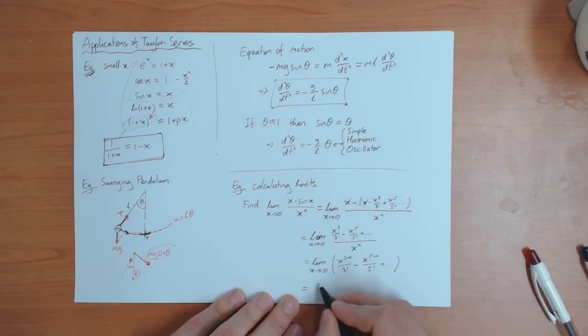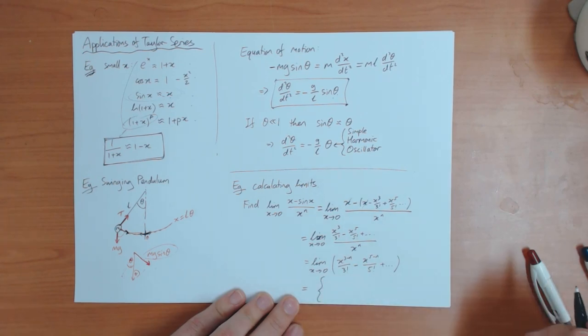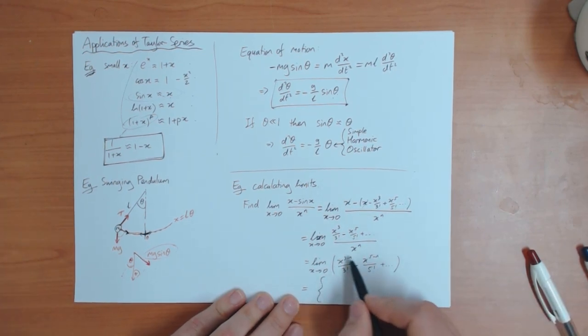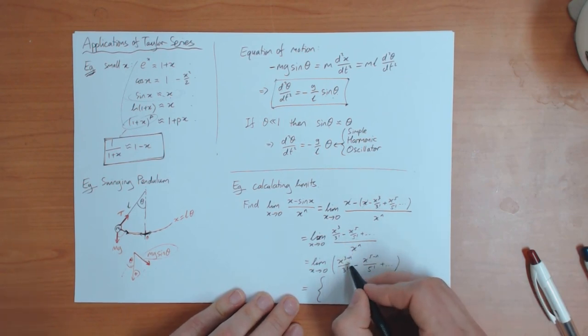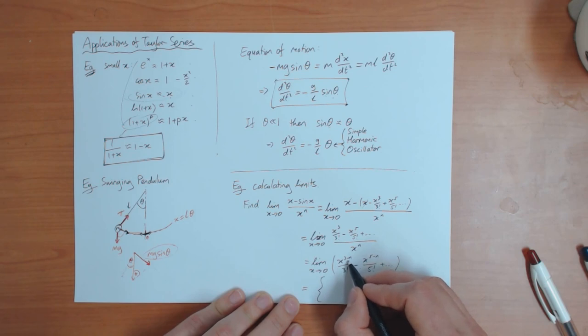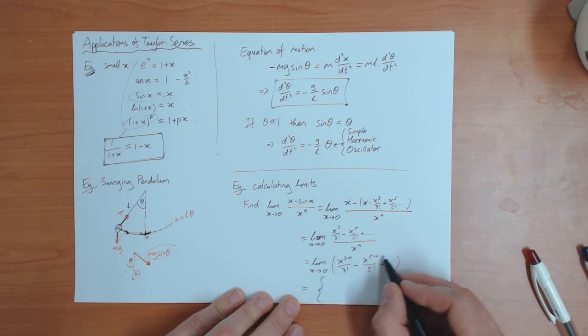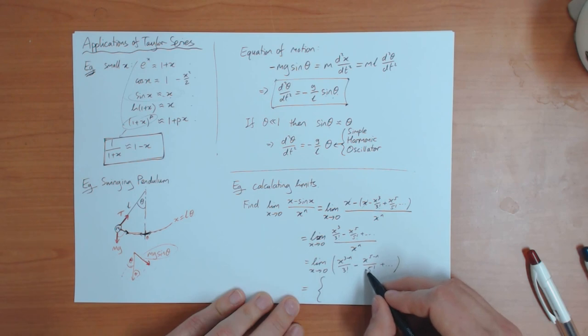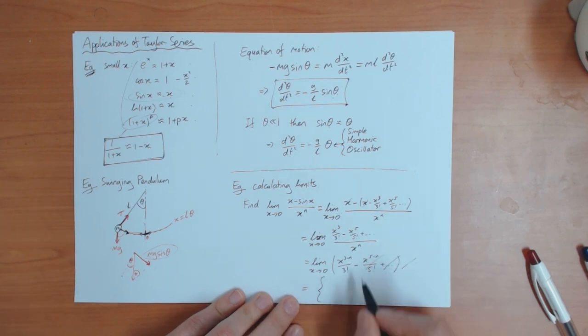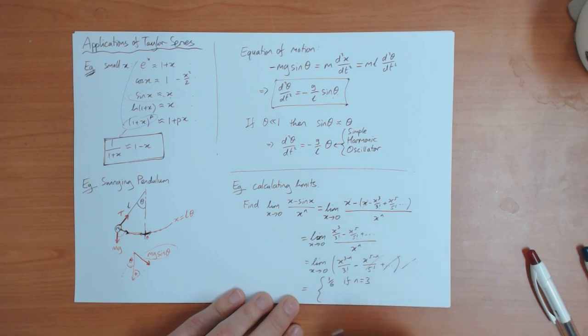So what's this equal to? I'm afraid I'm going to have to write a little bit small. There are three different cases. So the most interesting case, perhaps, is if n equals 3. If n equals 3, then all of these higher terms, this is like x squared. The next one will be like x to the 4. These all go to zero as x goes to zero. So you can ignore all the higher terms. And the only one that matters is this one. So if n equals 3, I just get 1 divided by 3 factorial. So I get 1 over 6 if n equals 3.